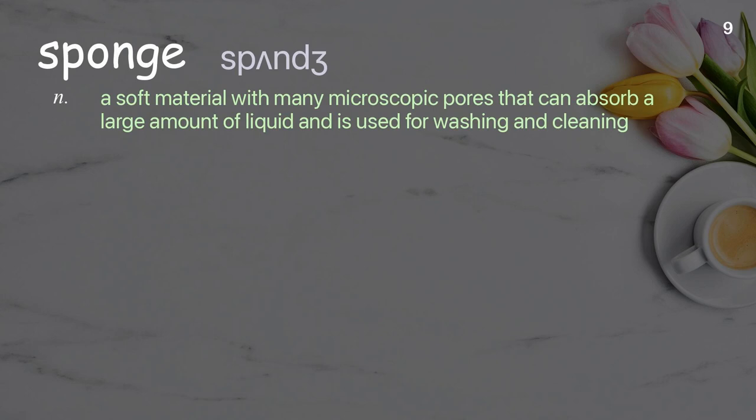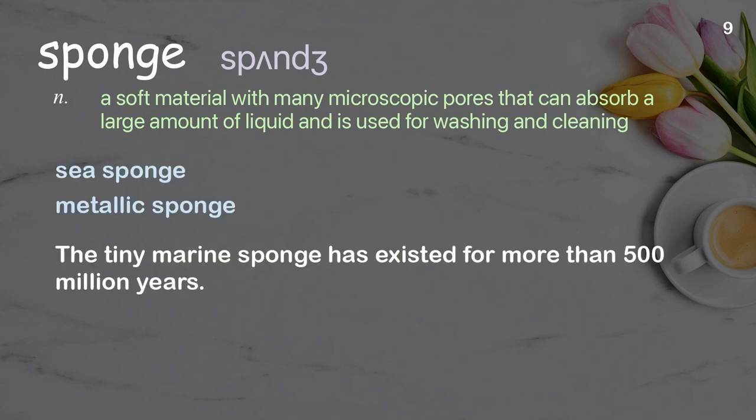Sponge. A soft material with many microscopic pores that can absorb a large amount of liquid, used for washing and cleaning. Examples: sea sponge. The tiny marine sponge has existed for more than 500 million years.